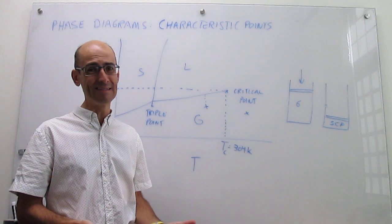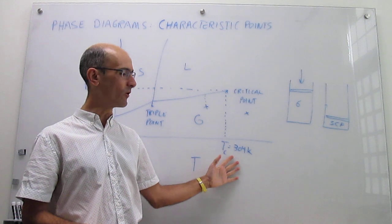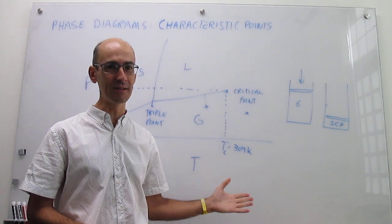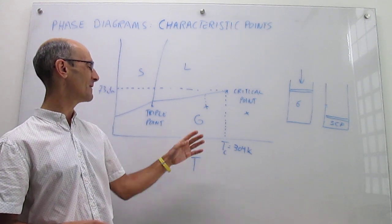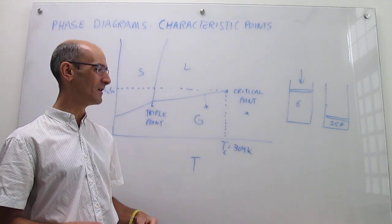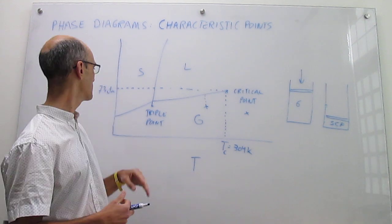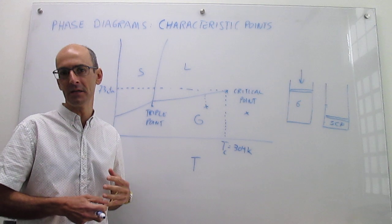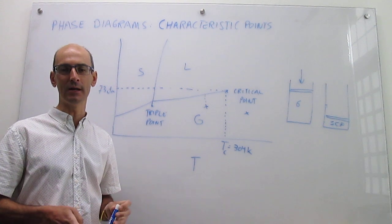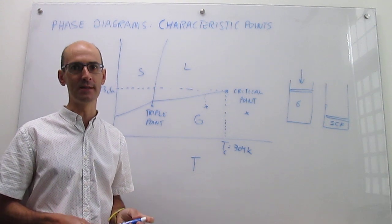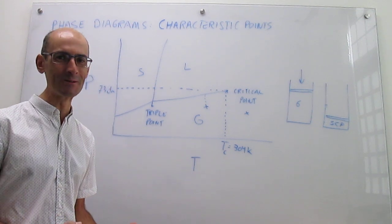For water, it's very hard to get a supercritical phase because the critical temperature goes all the way up to 647 Kelvin, making it really expensive. The critical pressure for water is also quite high at about 218 atmospheres. So while 73 atmospheres for CO2 is manageable without very special instrumentation, a few hundred atmospheres becomes more complicated. There are many applications of supercritical CO2.